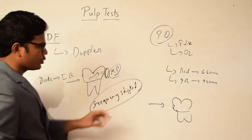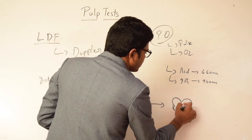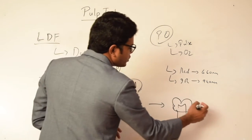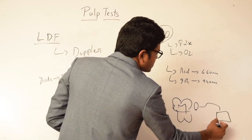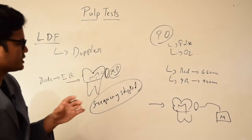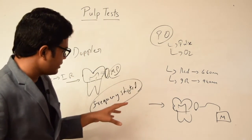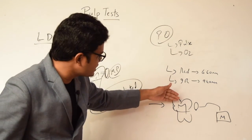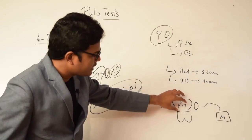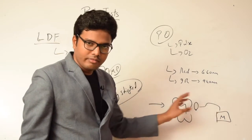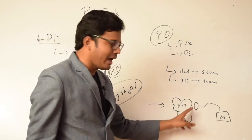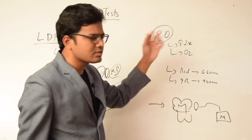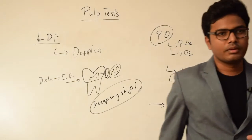When these lights are incident on a tooth, within the microvasculature we have oxygenated hemoglobin and deoxygenated hemoglobin, and there is a sensor on the opposite side of the tooth connected to a monitor. This monitor gives us the pulse rate as well as the oxygen concentration. The moment we incident these red and infrared rays, depending upon the ratio of oxygenated hemoglobin to deoxygenated hemoglobin, a particular amount of light is absorbed and a particular amount is reflected back, which is measured by the sensor.